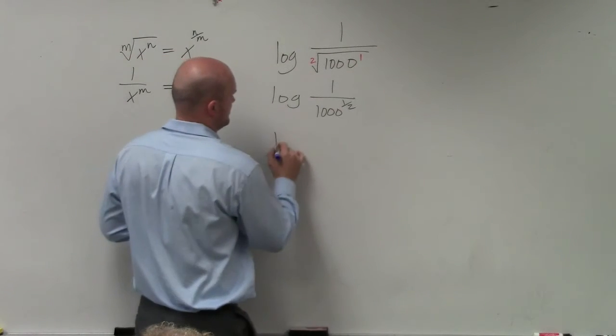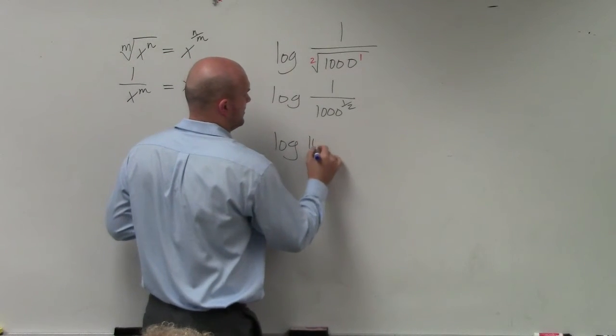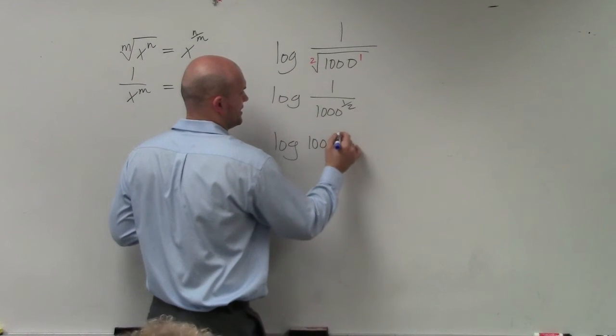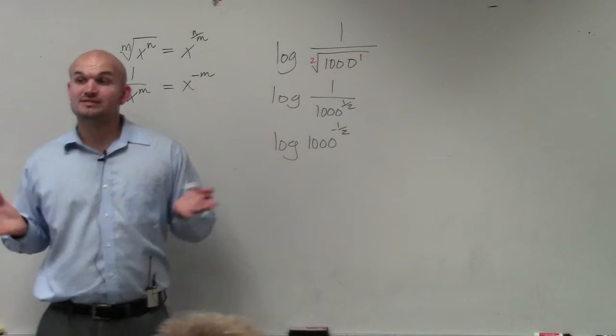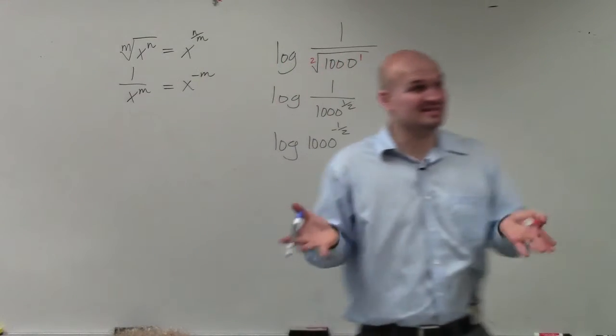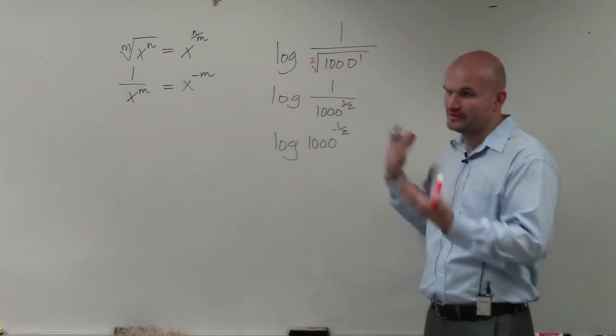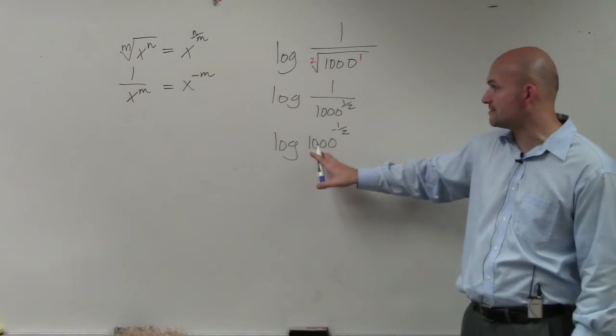Now, let's get this into the numerator. So we say log of 1000 to the negative 1/2 power. Does everybody see what I've done? I've tried to make this simple, so now it hopefully makes a little bit more sense and is easier to work with.